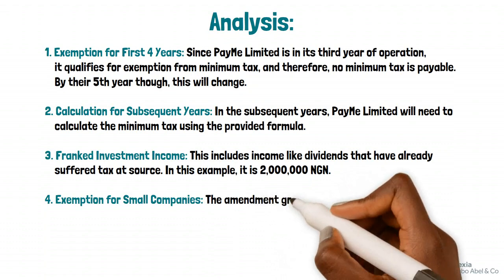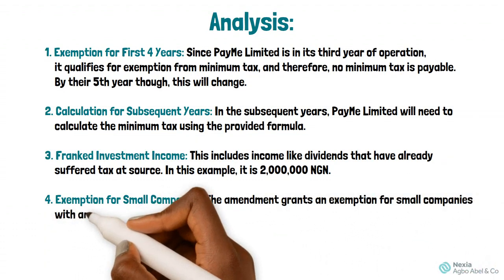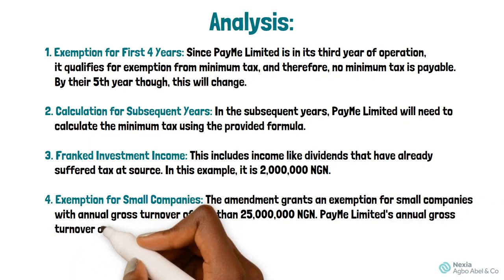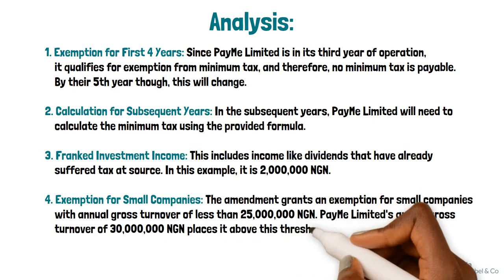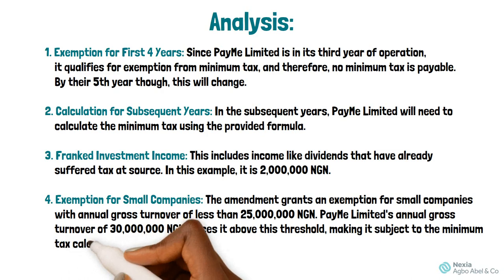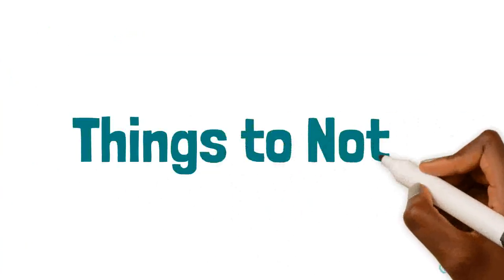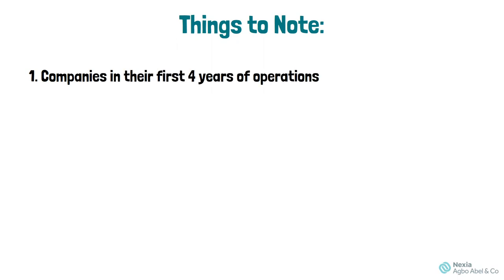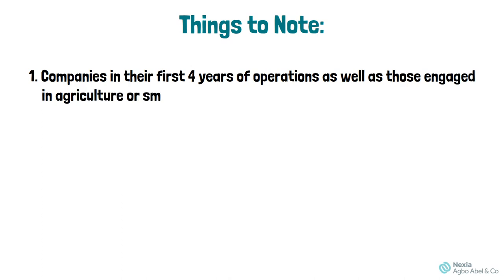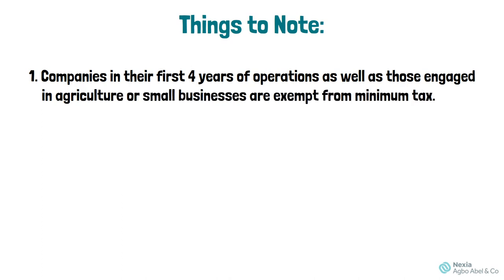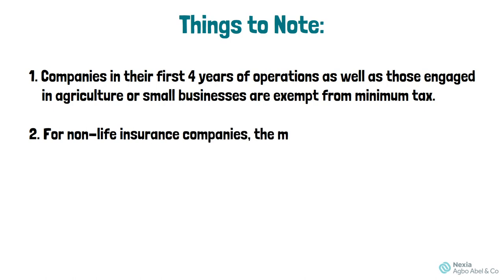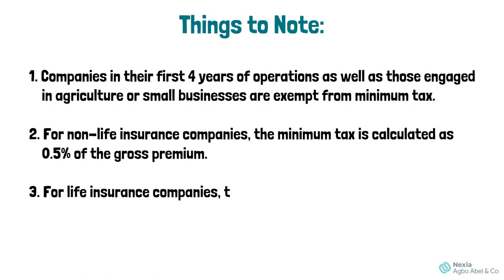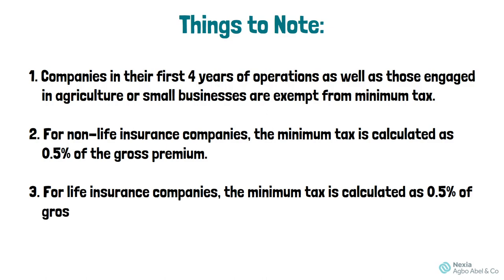Point four: exemption for small companies. The amendment grants an exemption for small companies with annual gross turnover of less than 25 million naira. Pay Me Limited's annual gross turnover of 30 million naira places it above this threshold, making it subject to the minimum tax calculation. Things to note: companies in their first four years of operations, as well as those engaged in agriculture or small businesses, are exempt from minimum tax. For non-life insurance companies, minimum tax is calculated at 0.5 percent of gross premium. For life insurance companies, minimum tax is calculated at 0.5 percent of gross income.